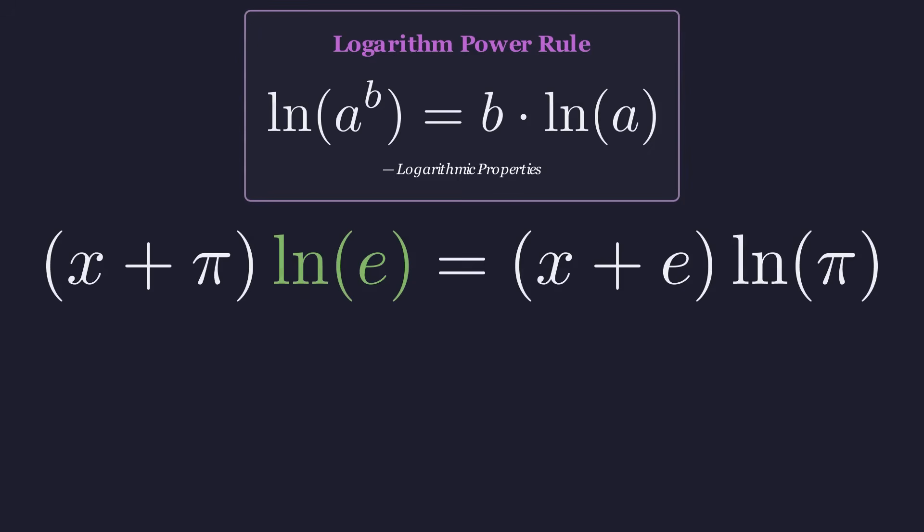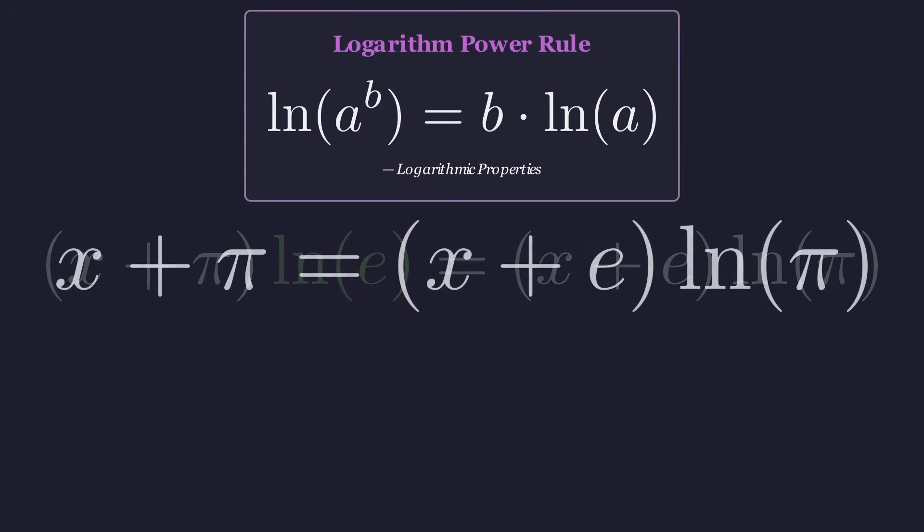Now for a crucial simplification. The natural logarithm of e is by definition exactly 1. So the left side simplifies nicely to just x plus pi.